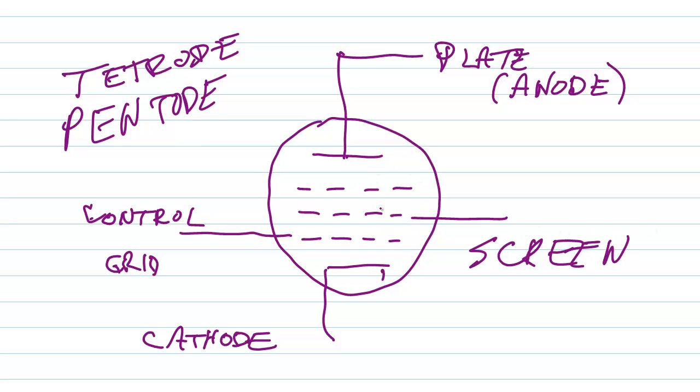That increases the isolation between the control grid and the plate by providing an extra element. What usually is done with the screen grid is a resistor is connected to the positive high voltage supply so that it gets a voltage that is positive but not as positive as the high voltage applied to the plate.